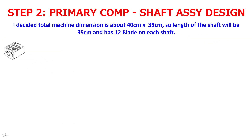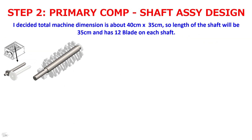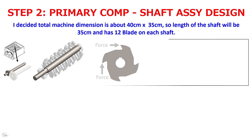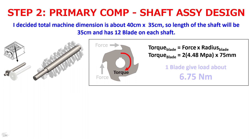The next step is shaft design. I decided the total machine dimension is about 40 cm by 35 cm, so the length of the shaft will be 35 centimeters. Each shaft has 12 blades, and if one blade has two force working on it, it will create a torsional load to the shaft from each blade. Based on this force and blade radius, one blade gives a load of about 6.75 newton-meters to the shaft.